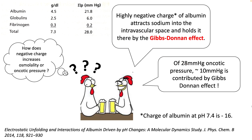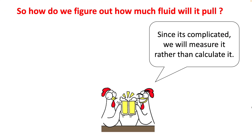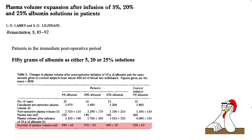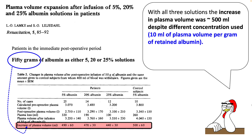We'll talk about the Gibbs-Donnan effect in our next lecture. So how do we figure out how much fluid this albumin will pull? The calculations are a little cumbersome; however, you can perform an experiment where you give the albumin and measure the plasma volume. Lemke et al gave 50 grams of albumin as 5%, 20%, and 25% and measured the increase in plasma volume. 50 grams of albumin increased plasma volume by around 500 cc despite different concentrations used — meaning around 10 ml of plasma volume is increased per gram of retained albumin.